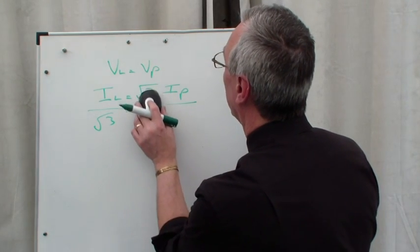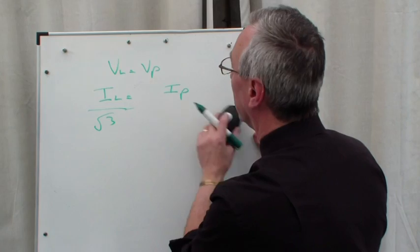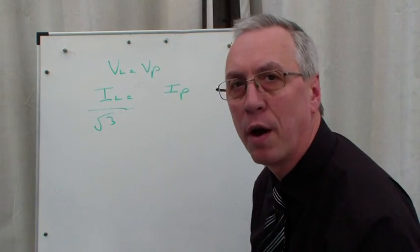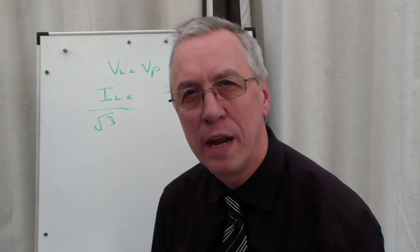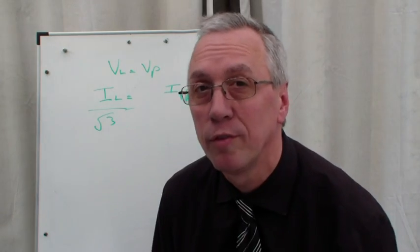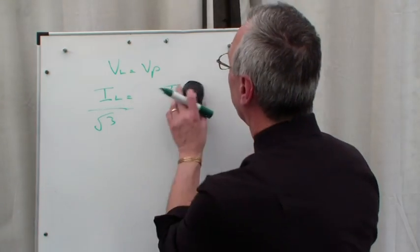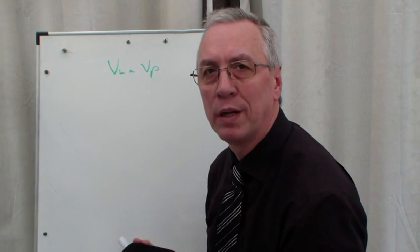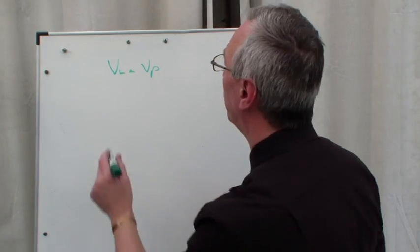And there you go: IP = IL / √3. It's always a matter of reading the question, what's the question asking for, write down the formula, always write the formula down in its basic form.